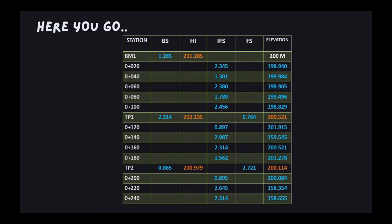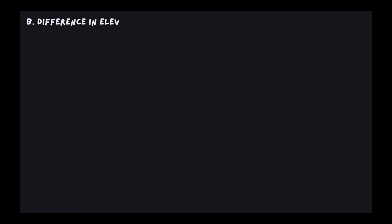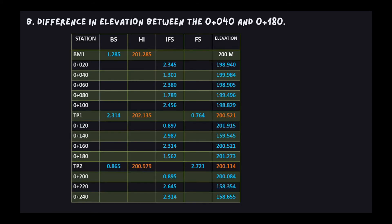These are the final answers from the given table for part A. Proceeding to part B, the difference in elevation between 0+040 and 0+180: from the table, 0+040 equals 199.984 and 0+180 equals 201.273. To solve, subtract the smaller from the larger: 201.273 minus 199.984 equals 1.289.